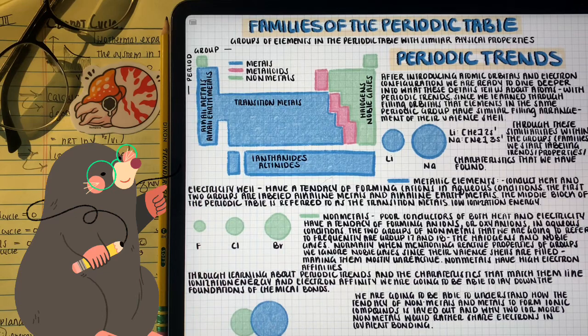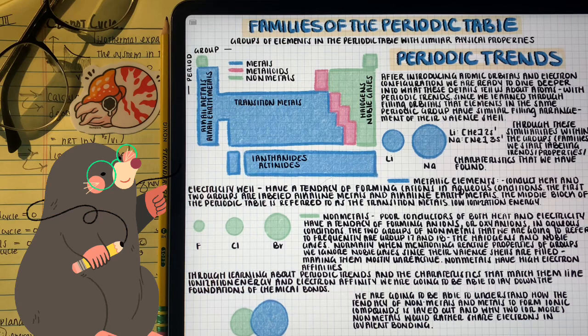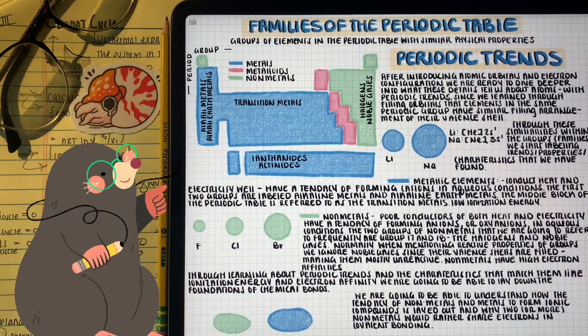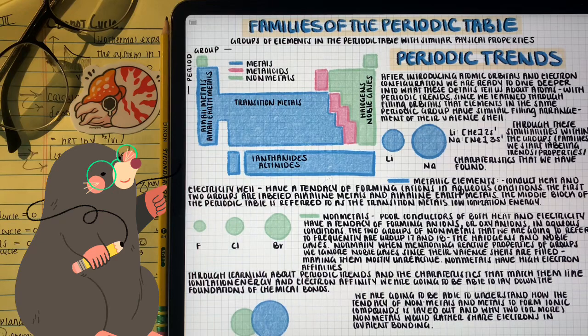We know that within the same period, as we go from left to right in the periodic table, we're increasing in the number of electrons in the valent shell and the nuclear charge. We know that atoms in the left-hand side of the periodic table have weaker nuclear charges than those in the right-hand side.